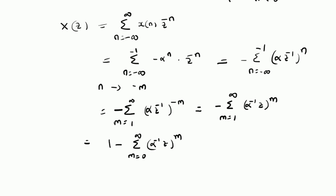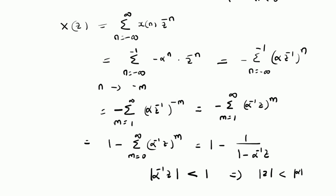By applying the concept of geometric series from n = 0 to ∞, we can write this summation as 1 minus 1/(1 - α⁻¹Z), provided that the absolute value of α⁻¹Z is less than 1. That means this is a geometric series with parameter α⁻¹Z, and it will converge as long as this value is less than 1. The ROC is given by |Z| < |α|, or in other words, the ROC is the region inside a circle of radius |α|.